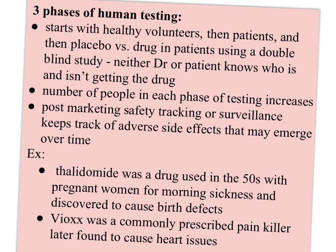For example, thalidomide was a drug used in the 1950s with pregnant women, primarily in Germany and Europe, for morning sickness, and later it was discovered to cause birth defects. Vioxx was a more recent drug — a commonly prescribed painkiller — which was then found to cause heart issues, quite often fatal. So research and development is never quite fully done.